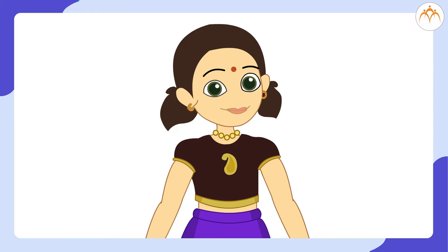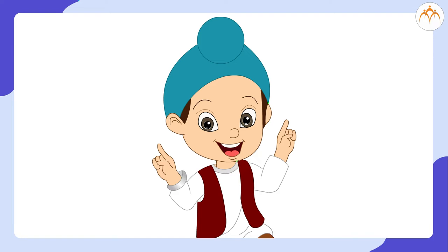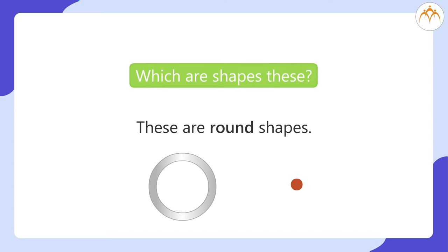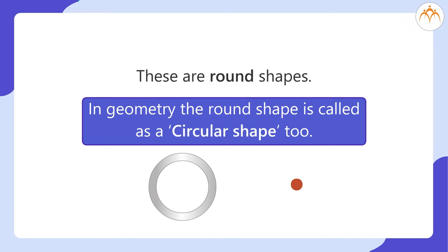Look at Shilpa. She is wearing a nice bindi. He is Balvindar. He is wearing a kada. Now, which shapes are these? These are round shapes. In geometry, the round shape is called as a circular shape too. This is called a circle.